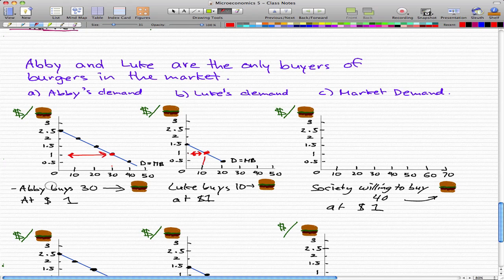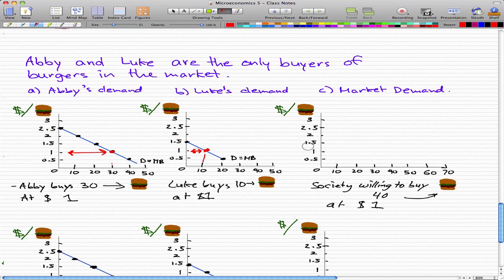Now since Luke and Abby are the only two people in the market for burgers, society is willing to buy 40 burgers at a dollar.